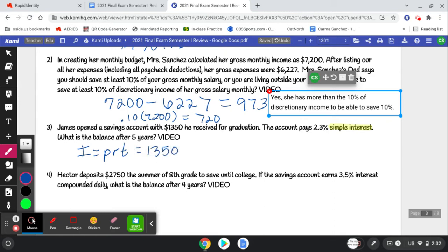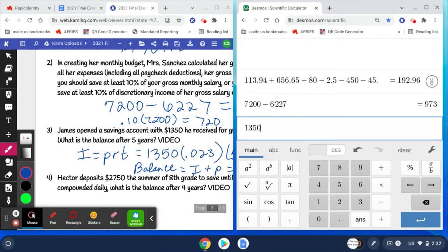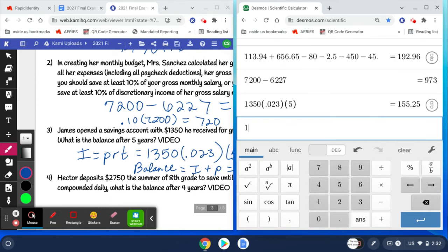My principal that I'm investing is $1350. My rate, remember how we convert this? 0.023 - you have to move the decimal twice. And then time is five years. It says what is the balance? I'm about to get the interest, and then we have to do a last step where the balance equals the interest plus the original principal. So let's not forget to add that at the very end.